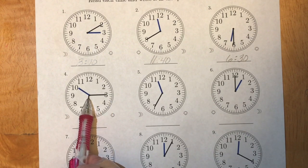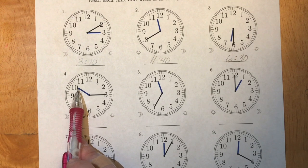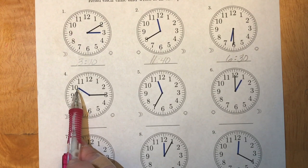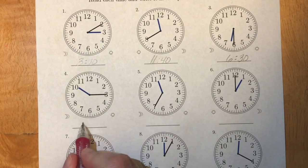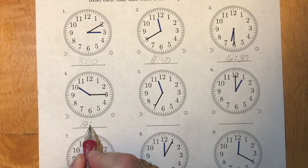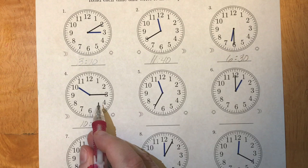If we look at the hour hand, it's just past the ten. So we're at the ten o'clock hour. So this is ten, fifteen. Fifteen minutes after ten o'clock.